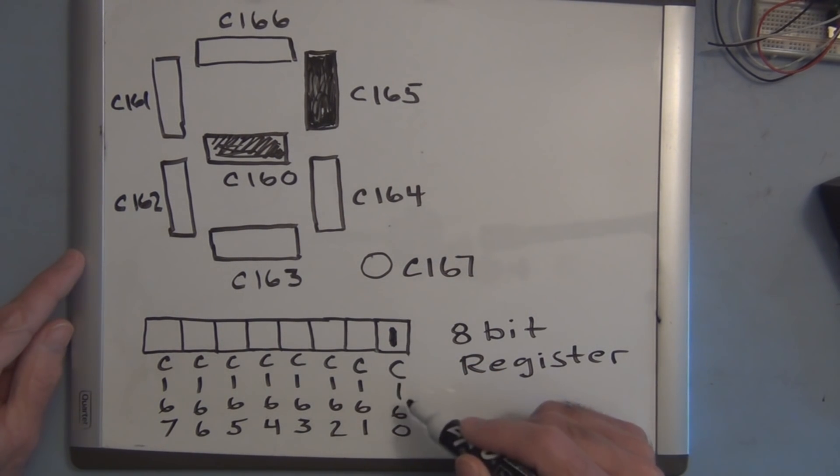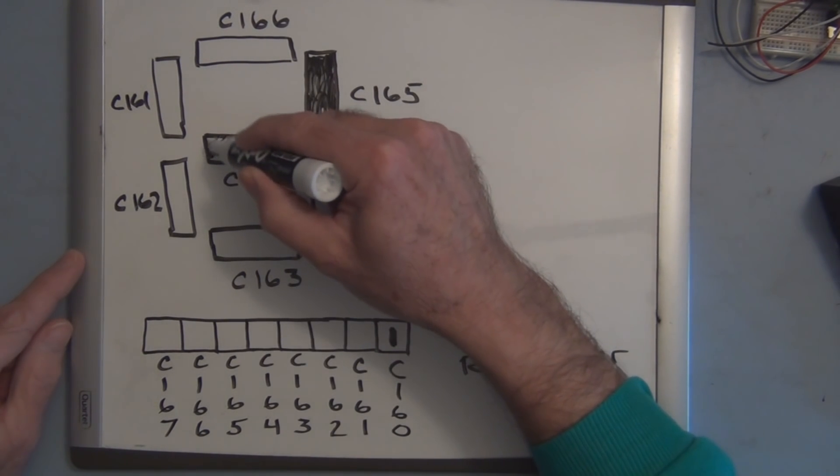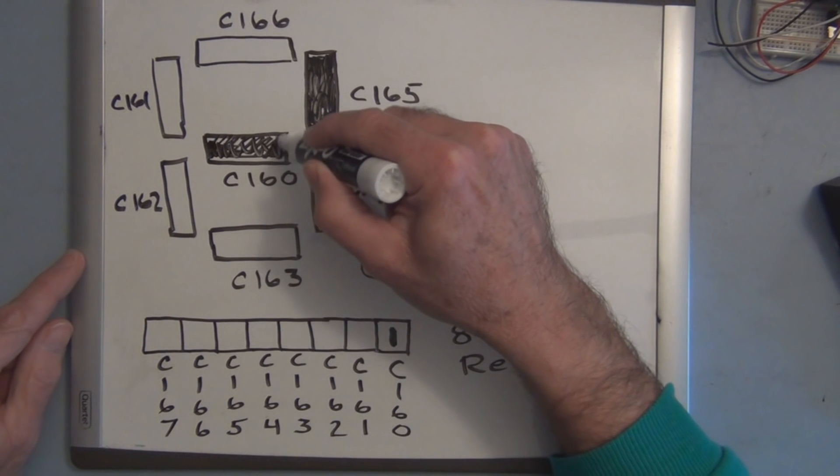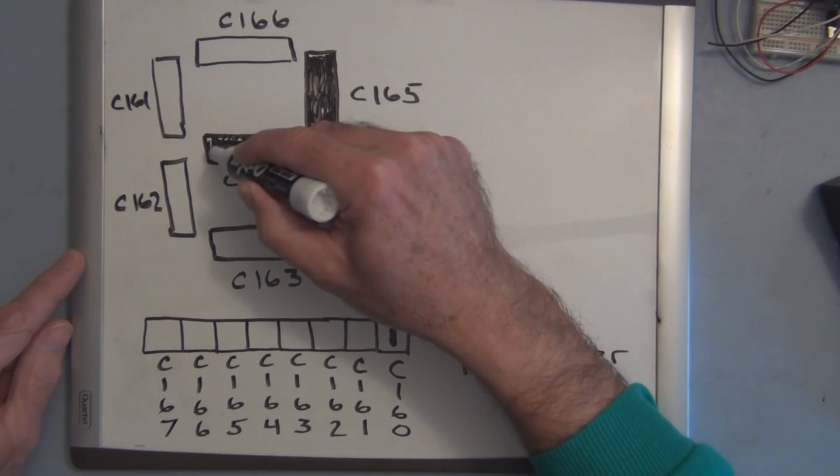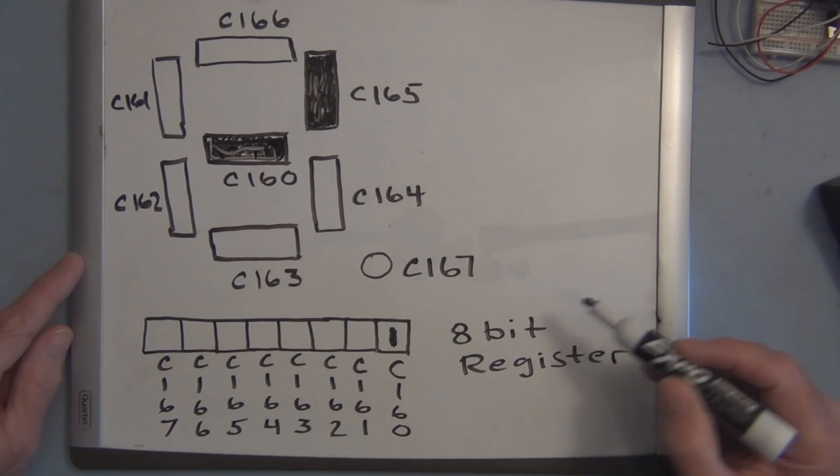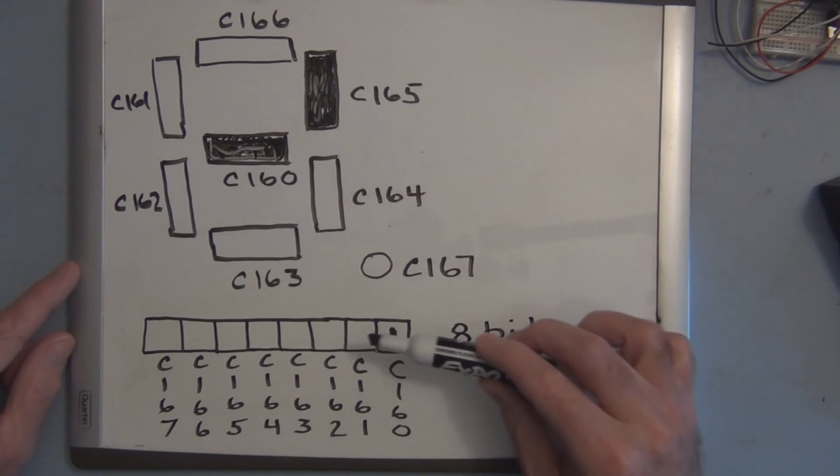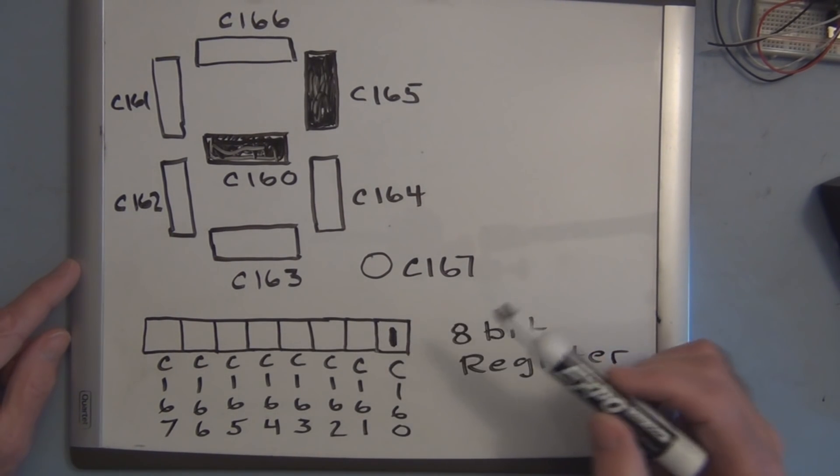In this case, that's C160 - that would turn this segment on, and if it's a zero it turns it off. So what you need to do is shift into this memory location an 8-bit word that has ones and zeros.